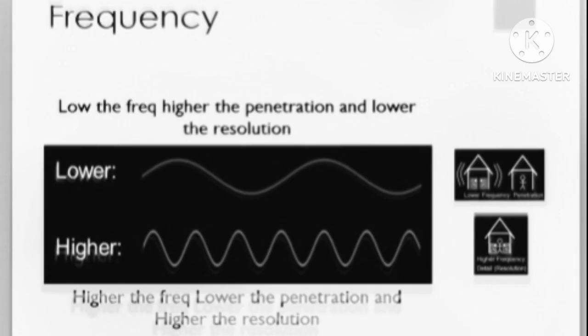Frequency and wavelength are inversely proportional — when one increases, another decreases. Frequency and penetration are also inversely proportional: higher the frequency, less will be the penetration; and less the frequency, higher will be the penetration.